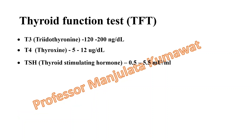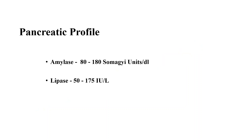For thyroid function tests: T3 (tri-iodothyronine) is 120 to 200 nanograms per dL; T4 (thyroxine) is 5 to 12 micrograms per dL; and TSH (thyroid stimulating hormone) is 0.5 to 5.5 milli-units per mL. For the pancreatic profile: amylase is 80 to 180 Somogyi units per dL, and lipase is 50 to 175 international units per liter.